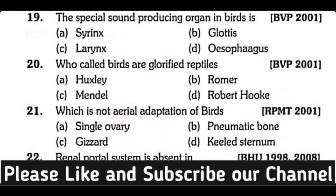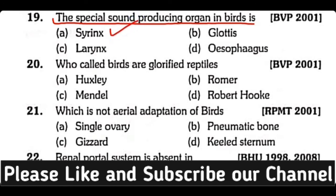Question 19. The special sound-producing organ in birds is: Syrinx, Glottis, Larynx, or Esophagus. Correct answer is option A. Syrinx is the sound-producing organ present in birds.